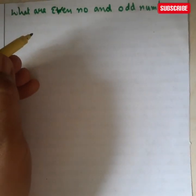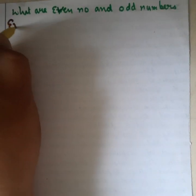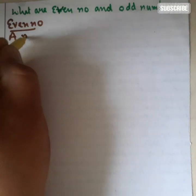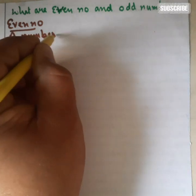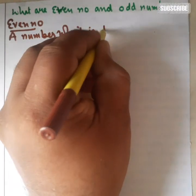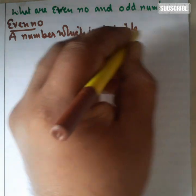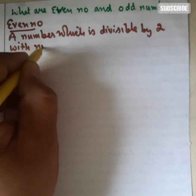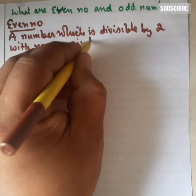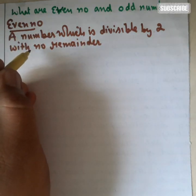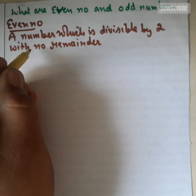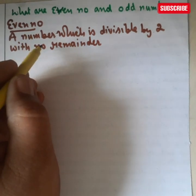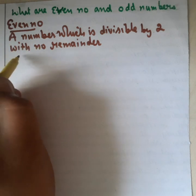Let us discuss even numbers first. What are even numbers? A number which is divisible by two with no remainder. This is the condition: if you want to find out whether a number is even, you divide the number by two and you get remainder zero.